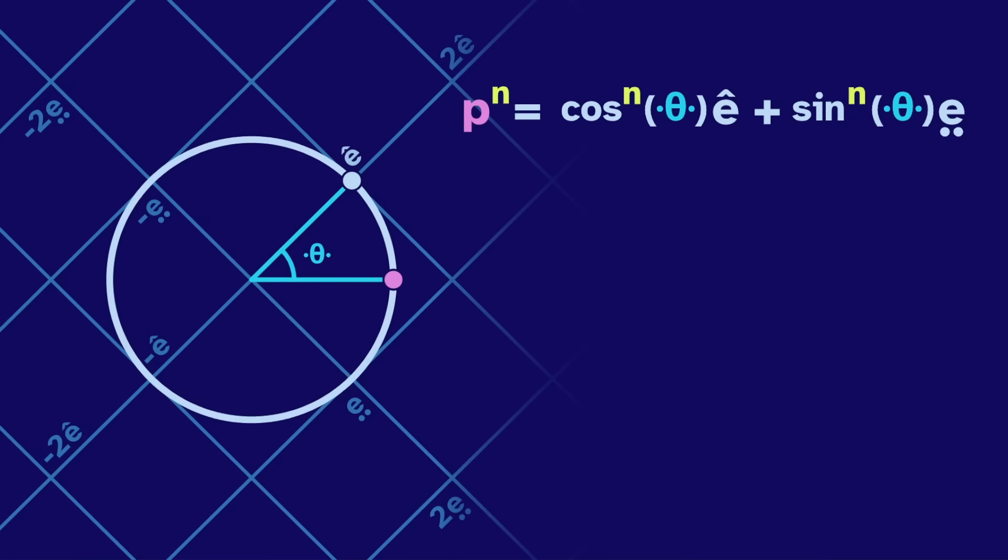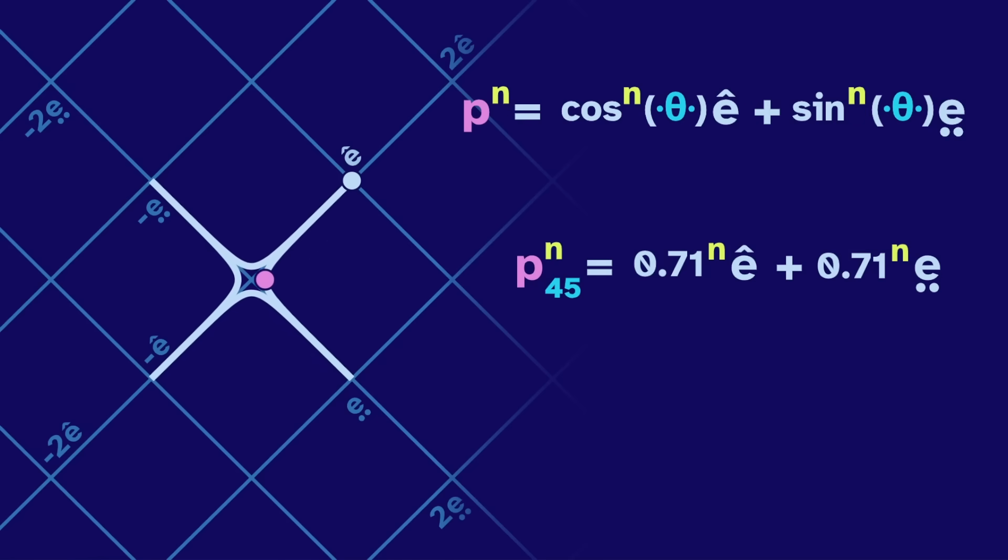if we take a horizontal point where theta gloves is 45 degrees, then we get powers of 0.71. So as n increases, these values decrease, getting closer and closer to zero.